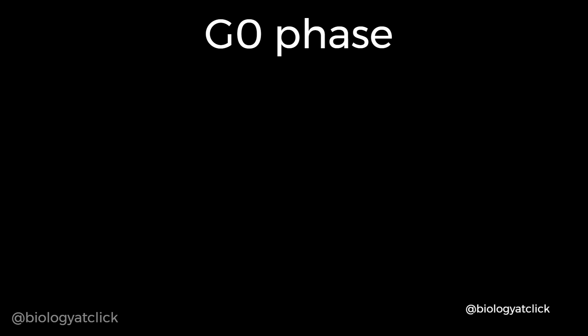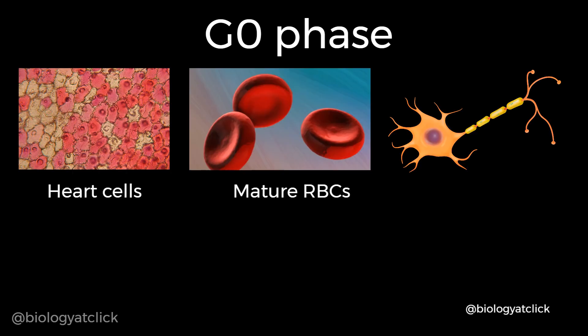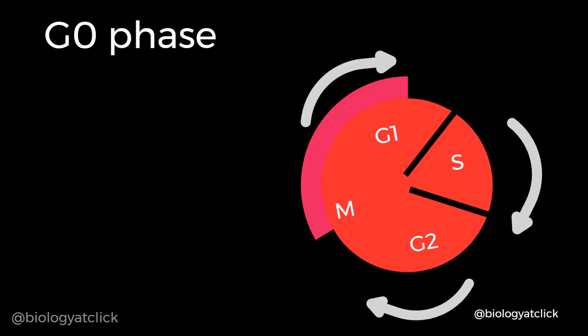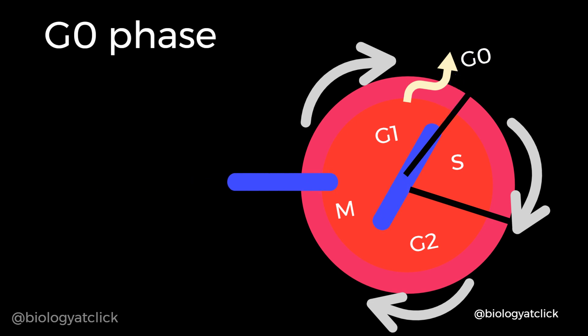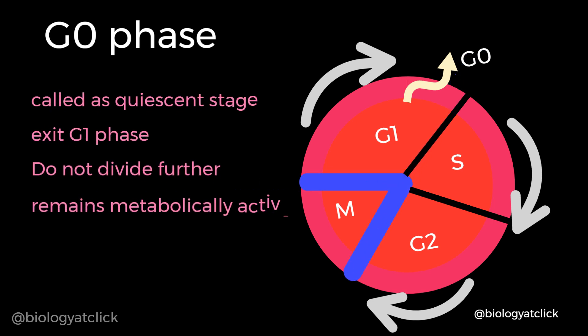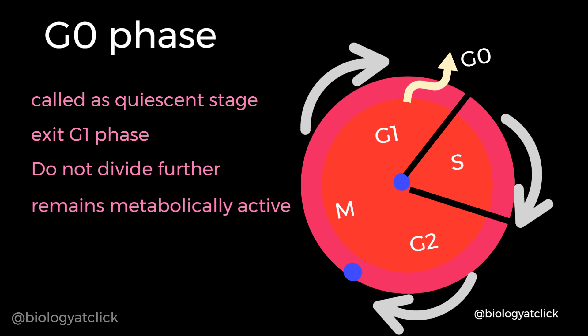Some cells in adult animals do not divide, such as heart cells, mature RBCs and nerve cells. Other cells divide only occasionally when needed to replace lost cells, owing to injury or cell death — for example, liver cells. These cells that do not divide further exit G1 phase to enter an inactive stage called the quiescent stage or G0 of the cell cycle. Cells in this stage remain metabolically active but no longer proliferate unless called on to do so depending on the requirement of the organism.